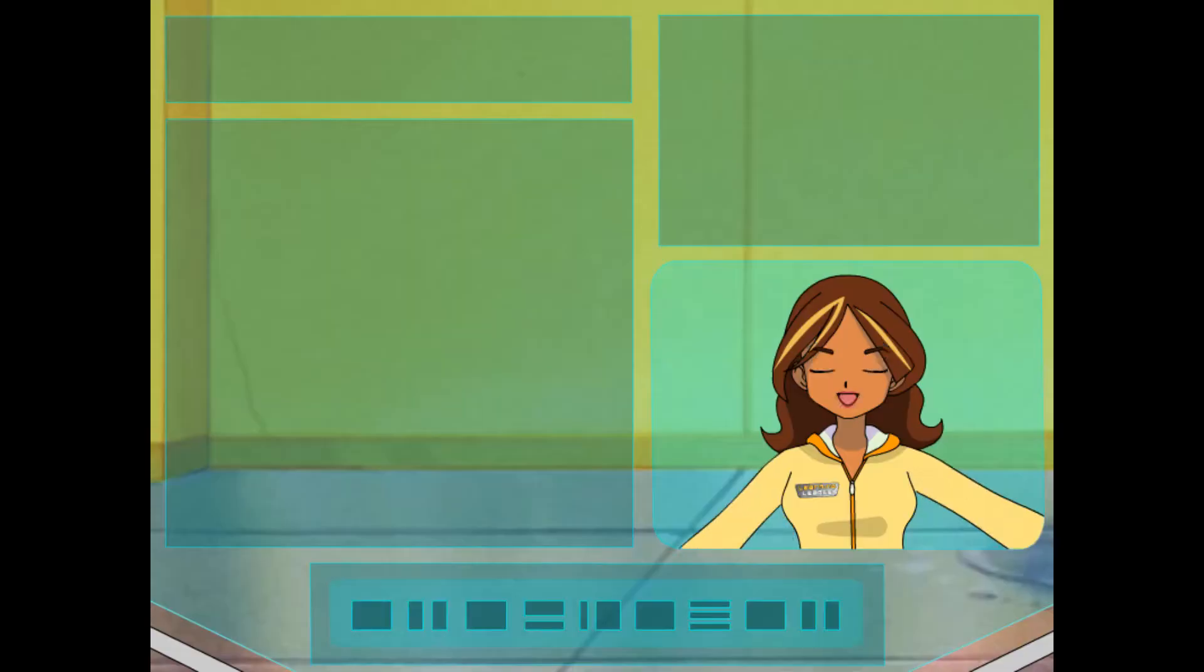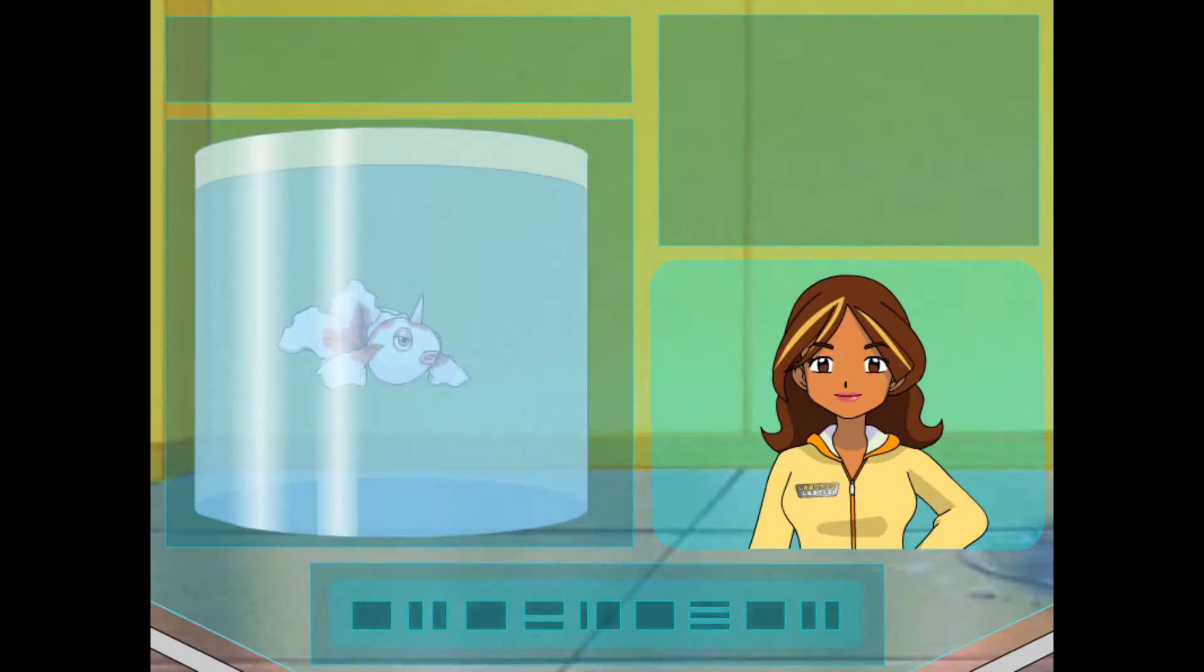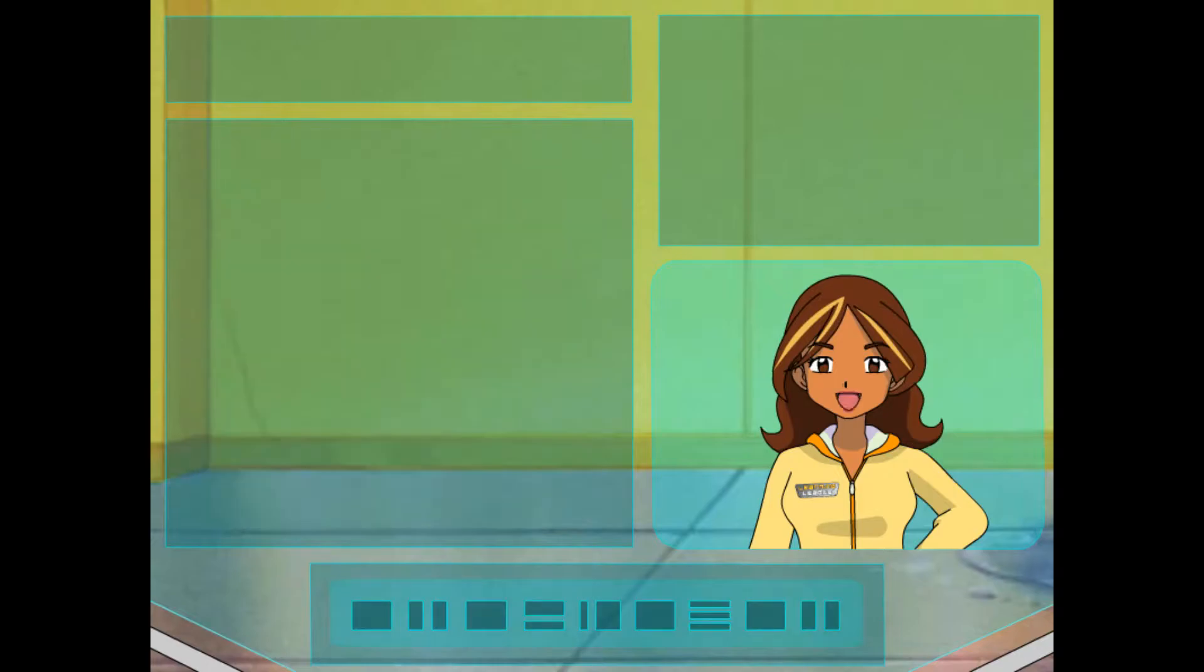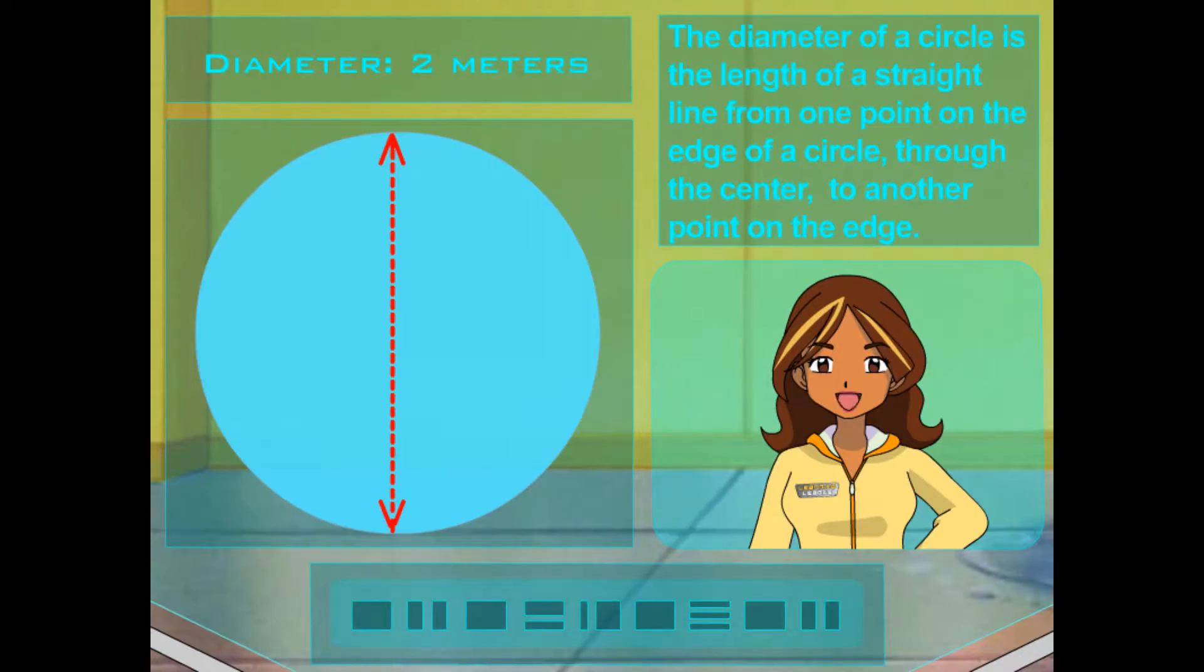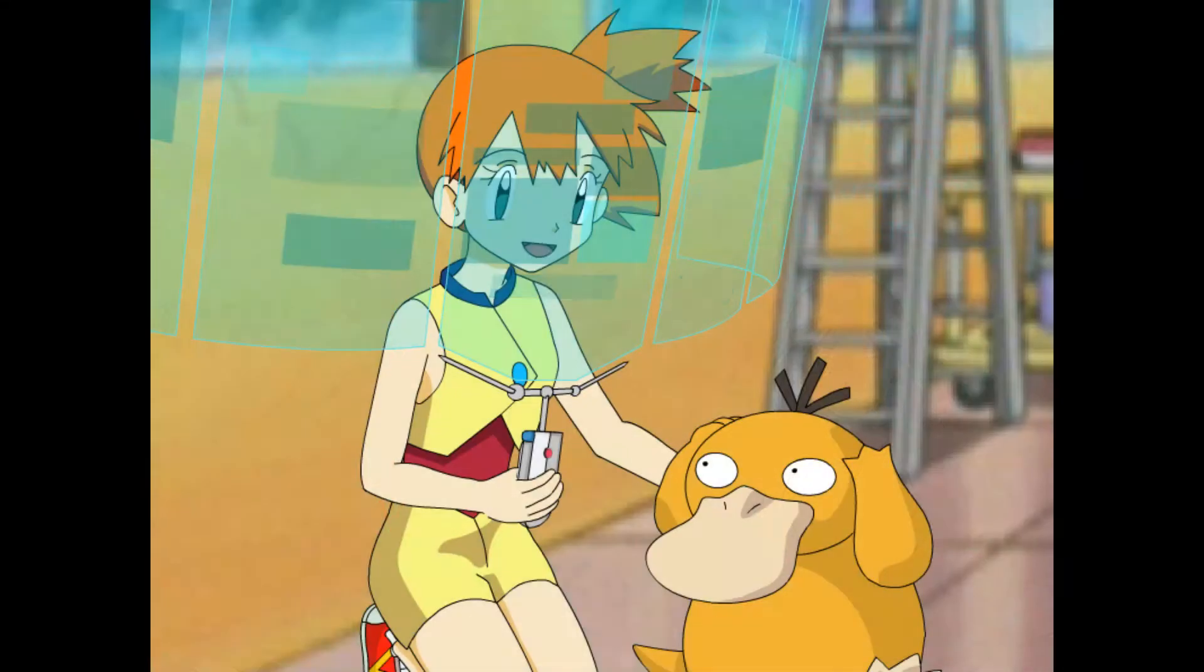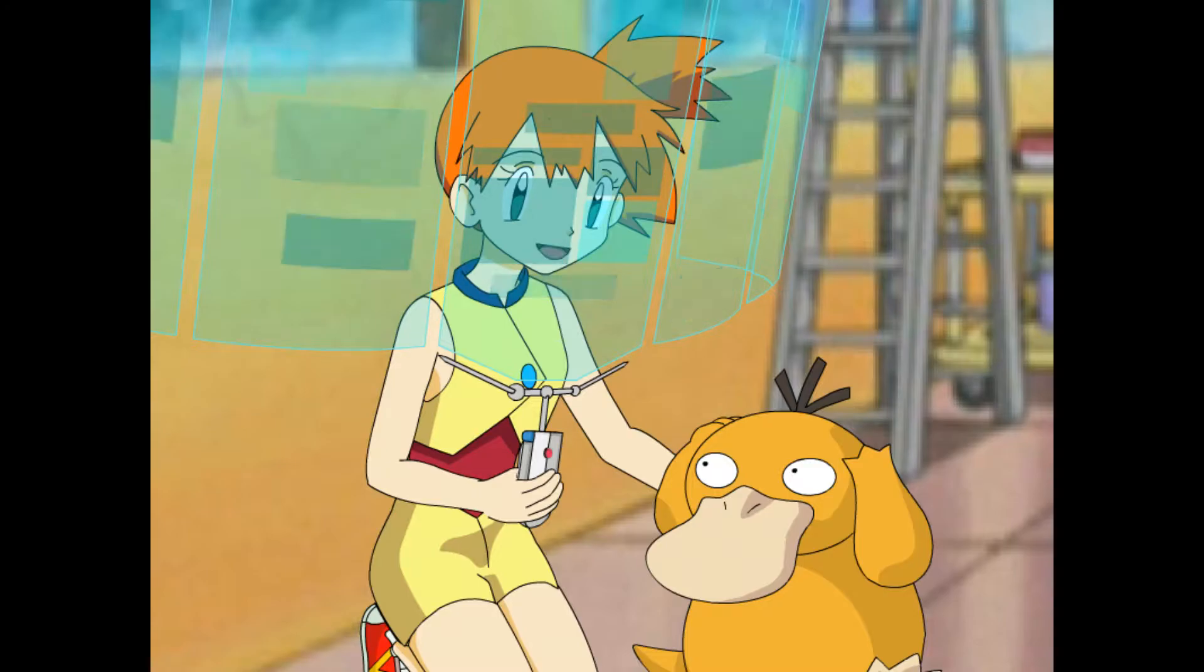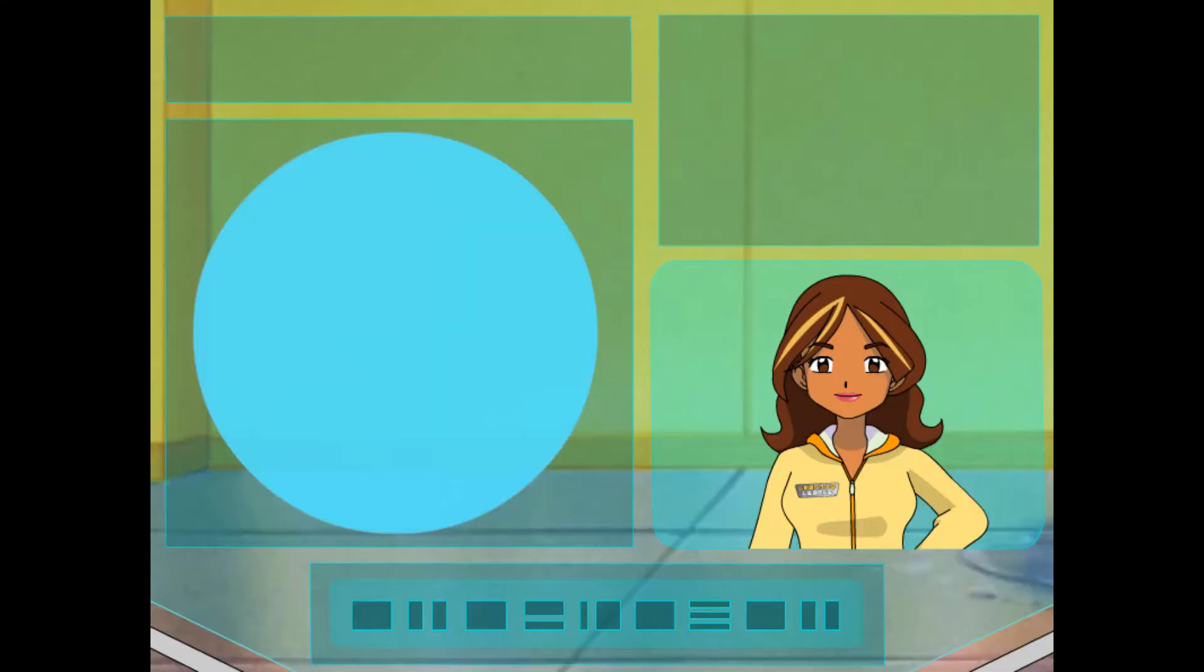I can help you with that. So first, tell me about the tank. I'll show you. It's a tank with a round top that is two meters across. Okay. So if it's two meters across, we say its diameter is two meters. Psyduck. Yep. The diameter of a circle is the length of a straight line from one point on the edge of the circle through the center of the circle to another point on the edge. Okay. So the diameter of the top of this tank is two meters? That's right.